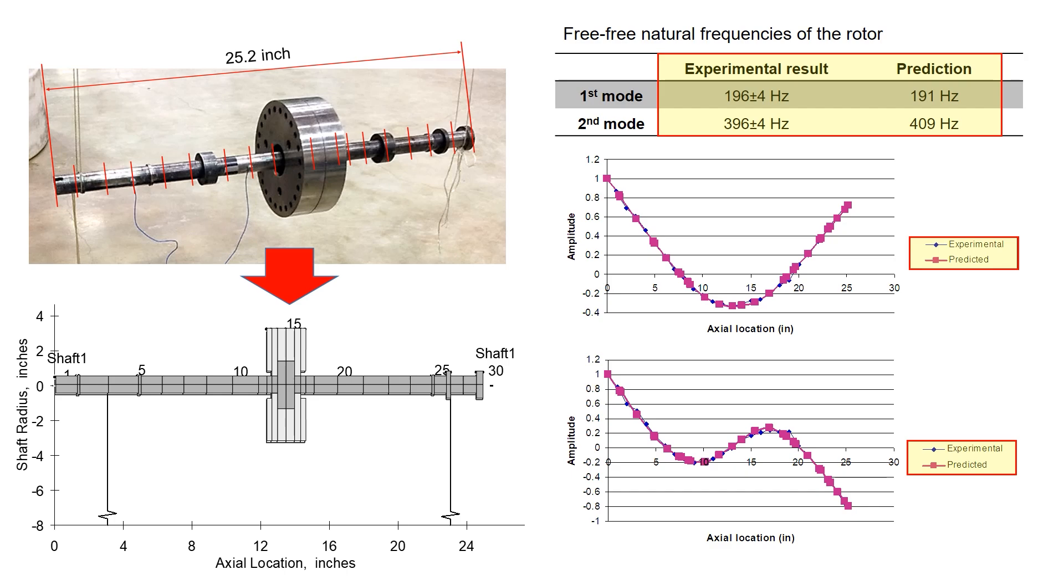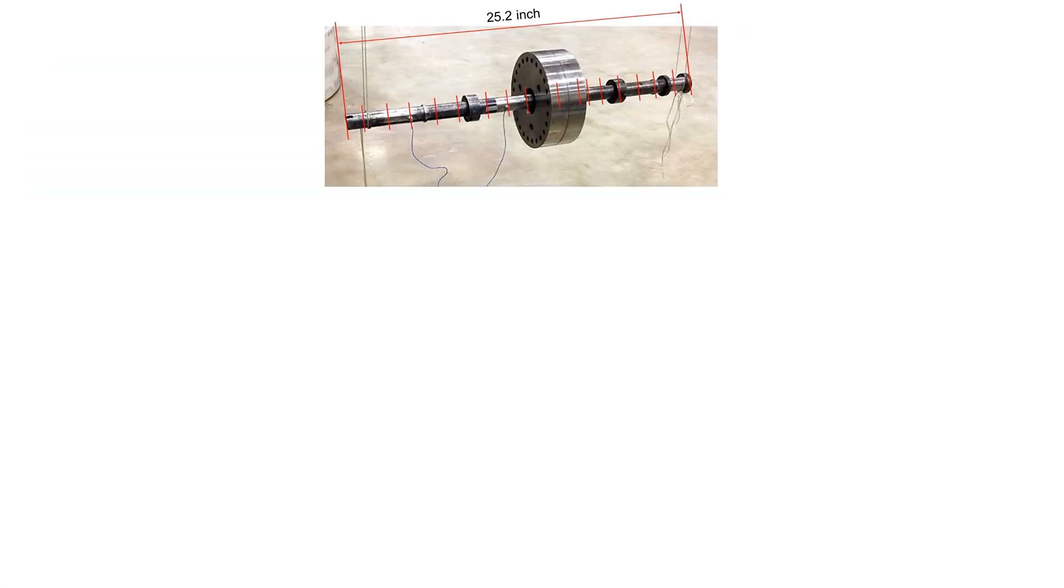This means that we could use the rotor dynamic model to predict the rotor responses with high confidence. In other words, the predicted results have a high chance of representing what will happen in real machine. So let's talk more about how your model applies to predicting the rotor dynamic responses.